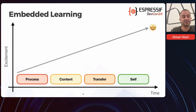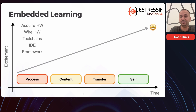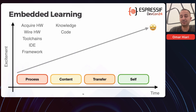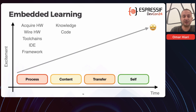If we look at a traditional embedded learning process, typically in the early stages we ask students to do things like choose and acquire hardware, wire this hardware, set up tool chains, make IDE choices, and even choose frameworks. Only then when we transfer to a content stage do we start transferring knowledge and doing some coding. Students might have seen some of that early on, but it wouldn't have been something they could do much with given the limited knowledge they had acquired at that point.